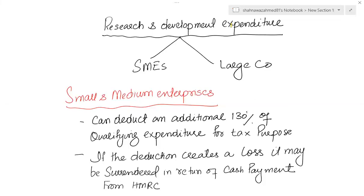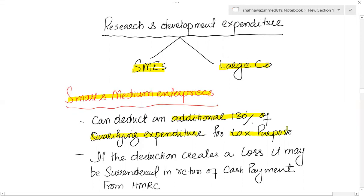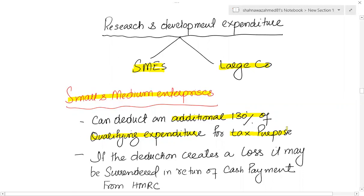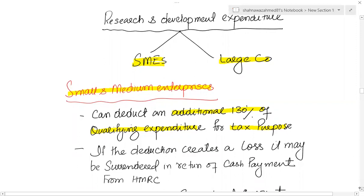The treatment depends on whether the company is a small and medium enterprise (SME) or a large company. If an SME incurs R&D expenditure, it can deduct an additional 130% of qualifying expenditure for tax purposes. This is to encourage companies to spend on R&D — the tax authority allows an allowable expenditure in excess of 130%. So if spending is 100,000, then 230,000 in total is allowed as an allowable expense.